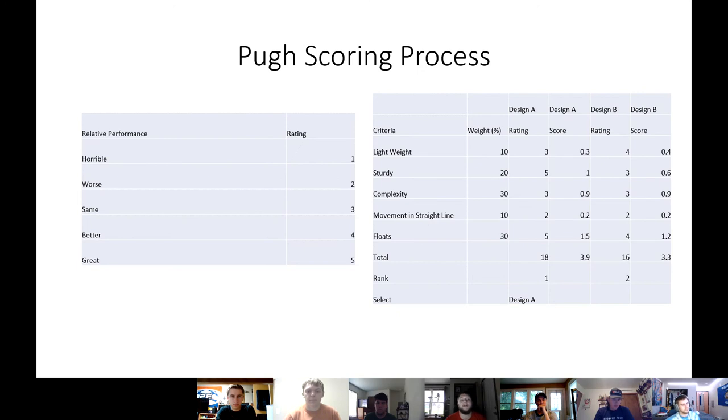We weighted the criteria as 10% for the weight, 20% for the sturdiness, 30% for the complexity, 10% for the movement in a straight line, and 30% on whether it floated or not. Based upon that and then the mathematical scores, we scored them from 1 to 5. And 1 was the worst and 5 was the best. And based upon that and the mathematical scores, Design A had the highest score, and therefore it should be selected as the final design.